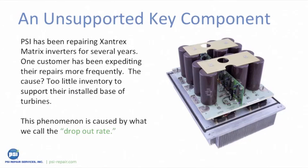Now let's examine a typical obsolescence issue: the Xantrex matrix. The process used on this project would be similar to any development we undertake. PSI has been repairing this product for a number of years. Recently, one of our customers was expediting repairs more frequently. Even with expedited repairs they encountered turbine downtime, especially during peak summer months when they had too little inventory to support their installed base. The OEM no longer makes or supports this product, leaving the customer to fend for themselves. Our customer was projecting an even greater shortage in the future as the mean time before failure for this product was falling.